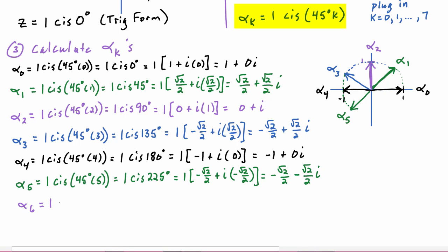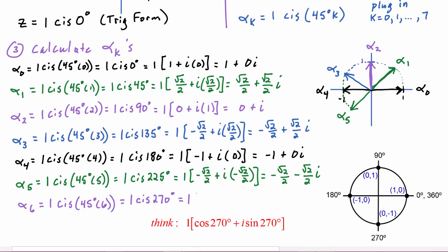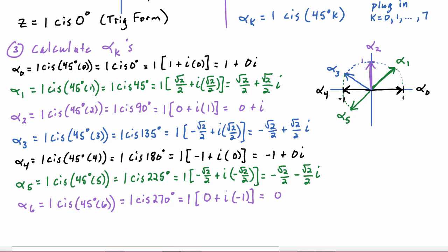Alpha_6 equals 1·cis(45°·6) = 1·cis(270°) = cos 270° + i·sin 270° = 0 + i·(−1) = 0 − i. It is pretty easy to graph either in its rectangular or trig form. That is Alpha_6.